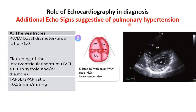The additional echocardiographic signs suggestive of pulmonary hypertension are grouped into three categories. The first category relates to the ventricles: a right ventricular to left ventricular basal diameter ratio above 1; flattening of the interventricular septum with D-shaped LV cavity in systole and/or diastole; and a TAPSE to systolic pulmonary artery pressure ratio less than 0.55, which denotes RV-pulmonary artery uncoupling.